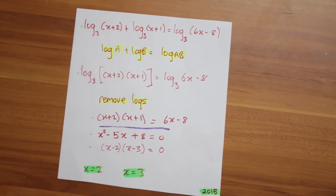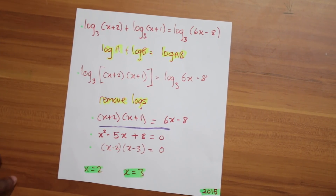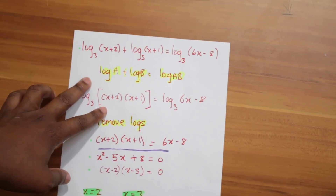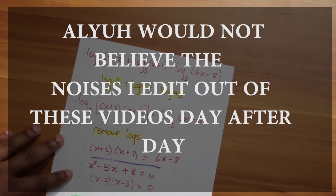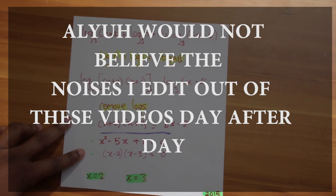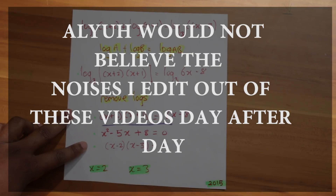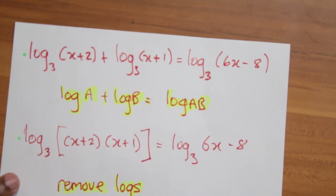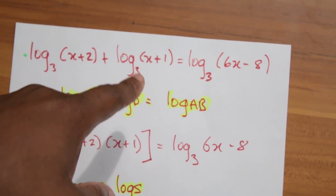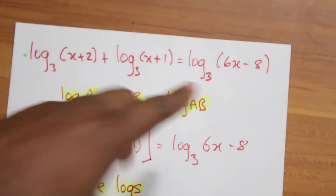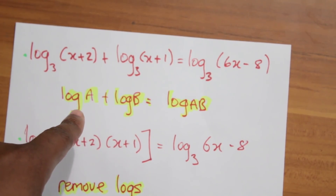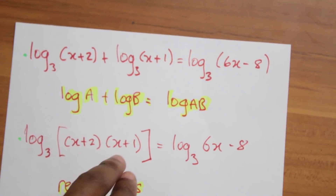So this is just a quick look at the logs — I just scribbled up some stuff. This was 2015. The question had log of x plus log of x plus one equals 6x minus eight, and we need to find the value of x. What we need to do is take these two and group them into one using the rule: log of a plus log of b is log of ab.